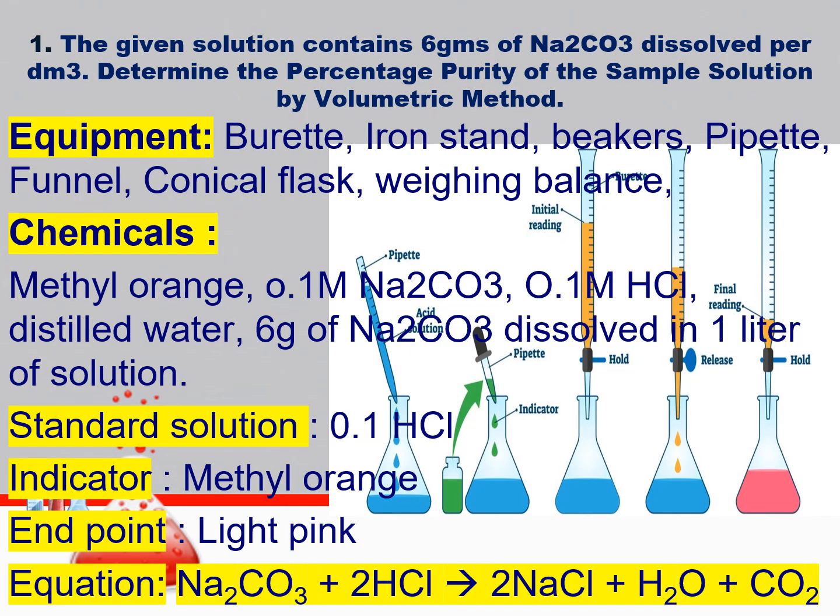In this experiment, equipment which you require is: burette, iron stand, beakers, pipette, funnel, conical flask, and weighing balts. Chemicals you require: methyl orange as an indicator, 0.1 molar sodium carbonate, 0.1 molar HCl, distilled water, and 6g of sodium carbonate dissolved in 1 litre of solution.